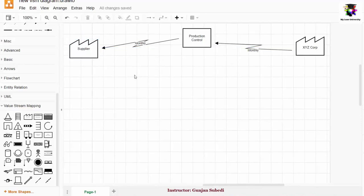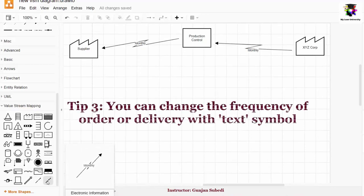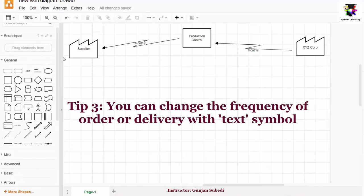Third tip, here in this value stream map, you can only see the daily order for manual information or you can see the monthly electronic information. So if I want to have some weekly information over here, we can do that too.